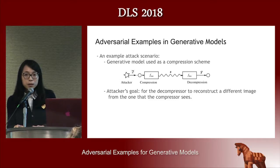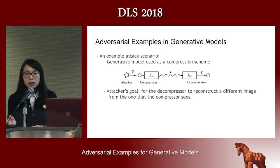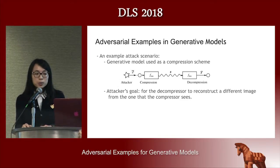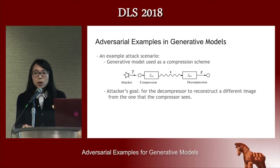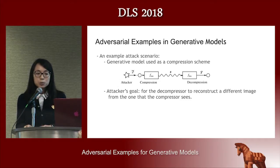For example, in the figure, if we have a digit like 7 and compress it into a latent space, the attacker can generate a small adversarial perturbation to the input — adding it to the 7 — and then during the decompression process, it can be reconstructed as adversarial target 8.